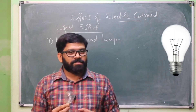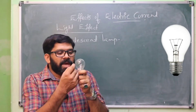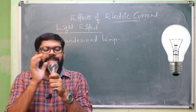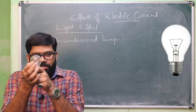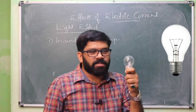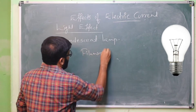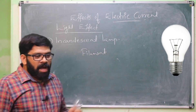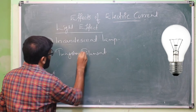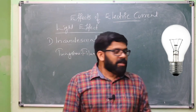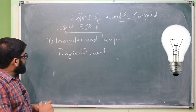The filament lamp is the same as a bulb — the same bulb we have seen. The main part of this incandescent lamp is a filament. Tungsten is used as the filament.